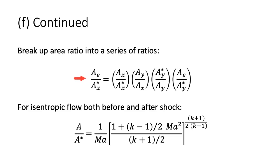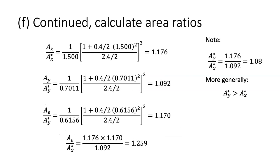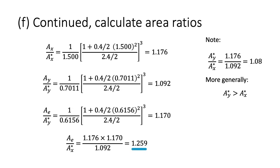Mathematically, we can cancel the area ratio across the shock, which is assumed to be very thin. For the remaining ratios, we use the isentropic relation for critical area and the corresponding Mach number. Plugging in the Mach number at state X before the shock, we get an area ratio of 1.176. At state Y after the shock, we get 1.092. At state E in the exit plane, we get 1.170. Dividing the first two equations gives the ratio of critical throat area after the shock to before the shock, which is 1.08 — and more generally, this critical area after the shock is always larger than before due to the entropy increase. Combining these areas gives the desired exit-to-critical-throat area ratio of 1.259.